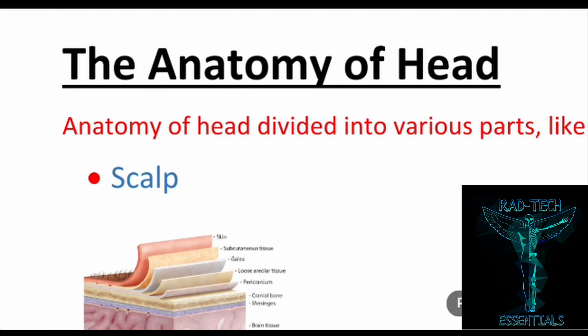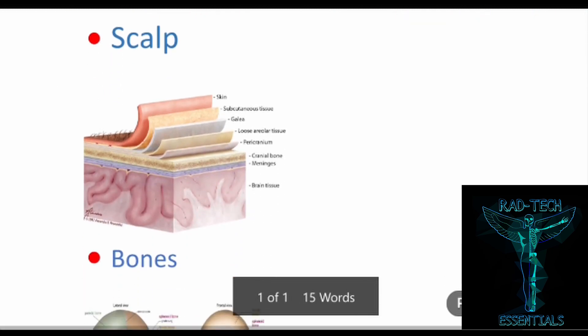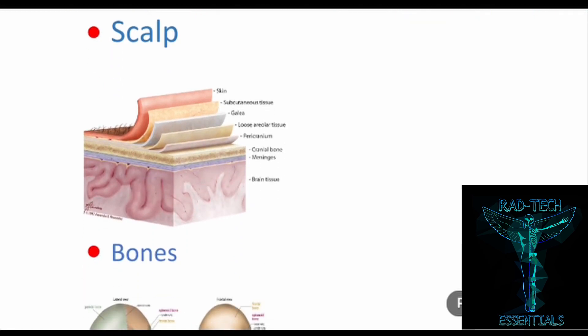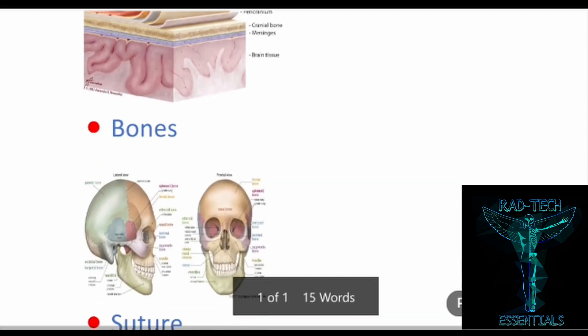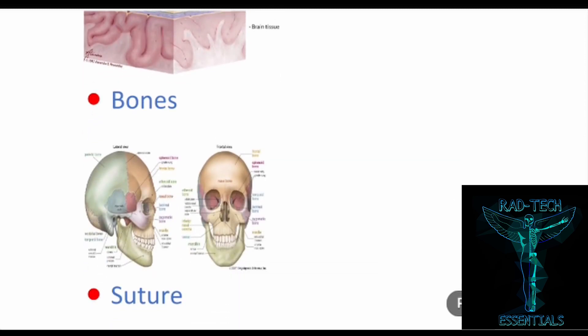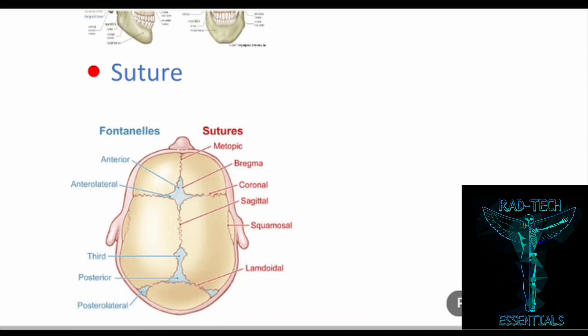Welcome to Red Tech Essentials. Today we're going to study the anatomy of the head. For convenience, I have divided the head into various parts. In this video we'll study the scalp — the various layers present between the skin and the bones — then the various bones, divided into cranial bone and facial bone, and finally the sutures or joints present between the bones of the skull.